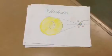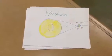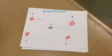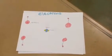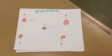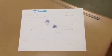A neutron is a particle that has no electrical charge and is located in an atom's nucleus. An electron is a negatively charged particle located outside of the nucleus, and is about 200 times smaller than either a proton or a neutron. Isotopes are atoms of one element that have a different number of neutrons than other atoms of that element.